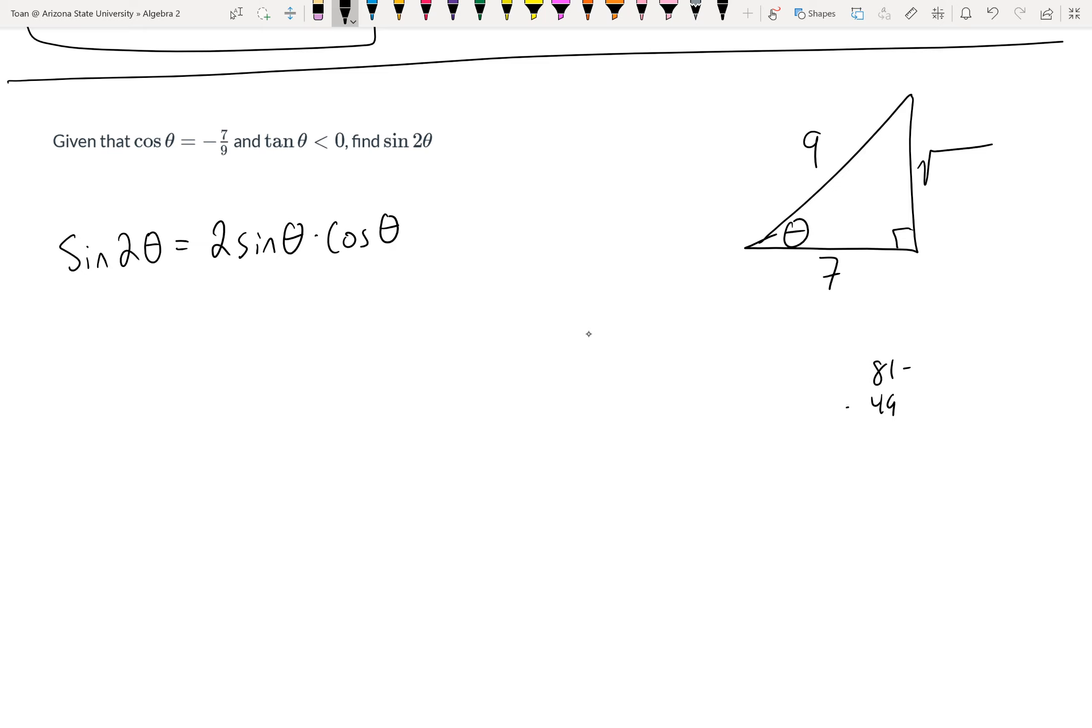√32 can be simplified, right? 32 is 16 times 2, so that's 4√2. I can just read the picture: what is sine of this theta? Opposite over hypotenuse.